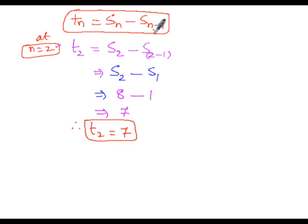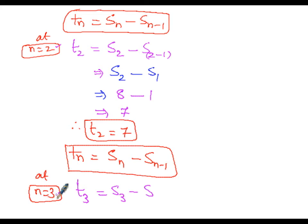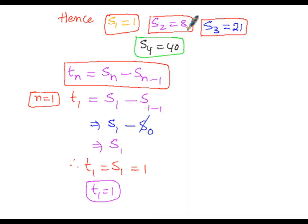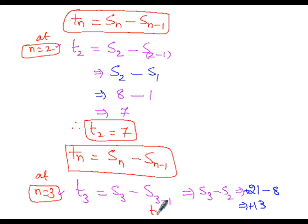To get the third term, we replace n by 3. T(3) equals S(3) minus S(2). We have S(3) equals 21 and S(2) equals 8. So T(3) equals 21 minus 8 equals 13. The third term is 13.